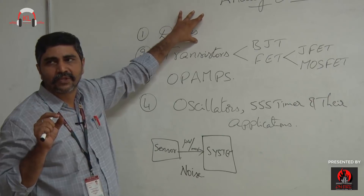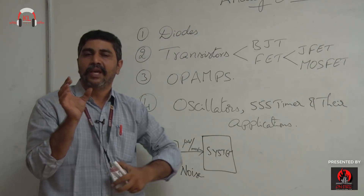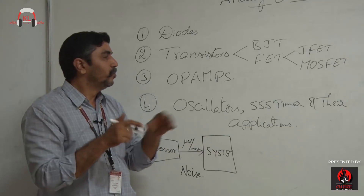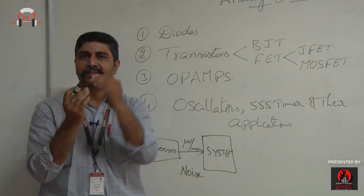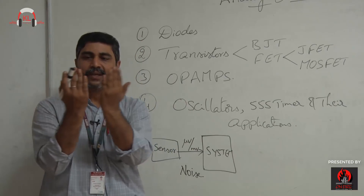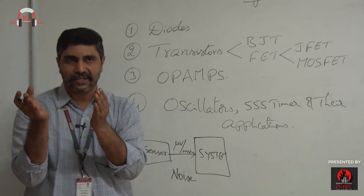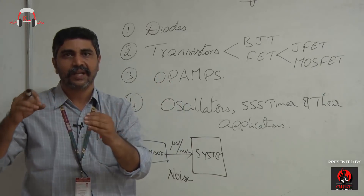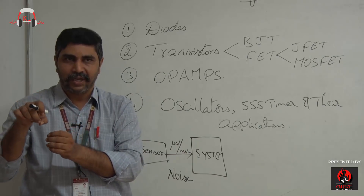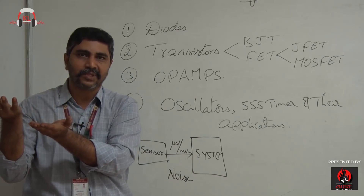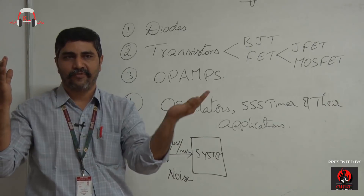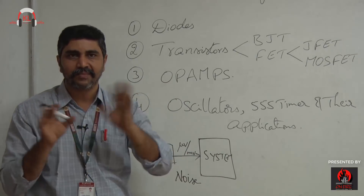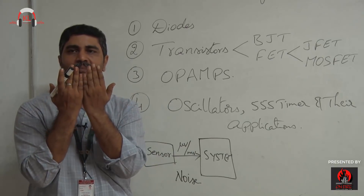To study diodes, the prerequisite is a good understanding of electronic configuration, atomic model, and types of materials: conductors, insulators, and semiconductors — classified as intrinsic and extrinsic. Intrinsic semiconductors are pure, while extrinsic are doped. Adding a third group impurity makes it P type; adding a fifth group element makes it N type.